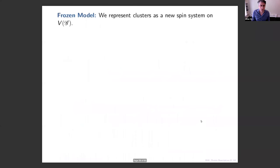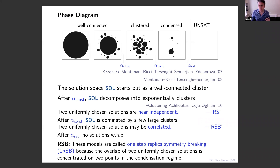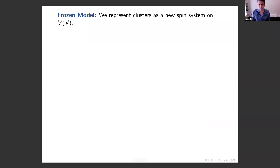The physicists have quantitative predictions for where each of these thresholds occurs, and what the solution space looks like in each regime. You might say, well, your definition of a cluster doesn't sound very tractable. There's actually a better representation of a cluster in terms of what I'll call the frozen model.